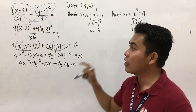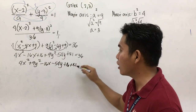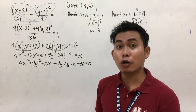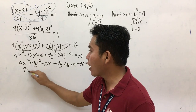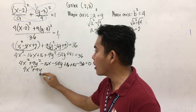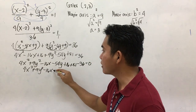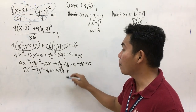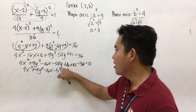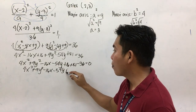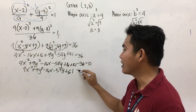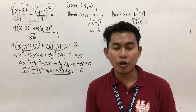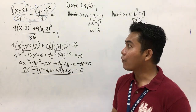With the 36 on the right side, you are going to transpose it to the other side — it will turn into negative 36, making the right side 0. So your final answer is: 4x squared plus 9y squared minus 16x minus 54y plus 61 equals 0. This is the general equation of our ellipse for the first example.